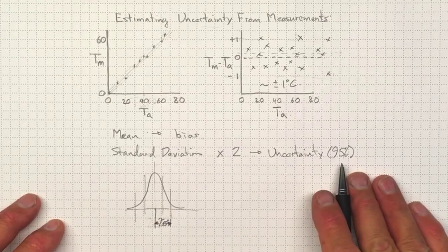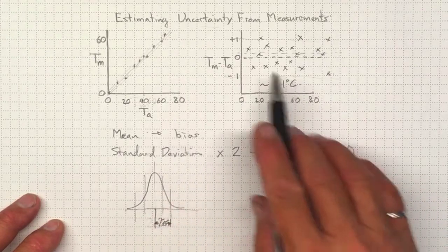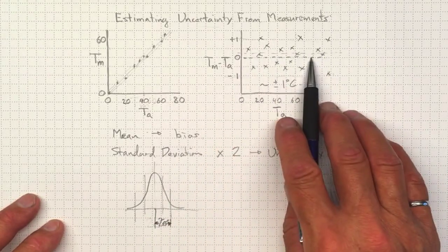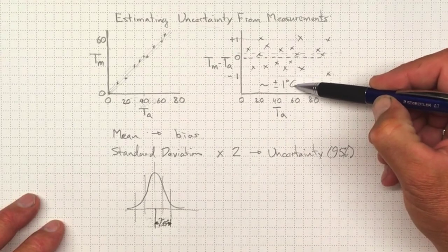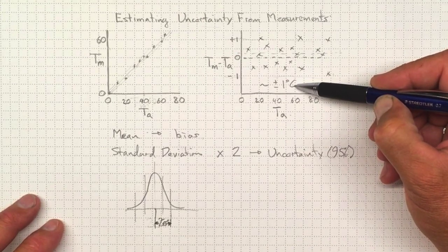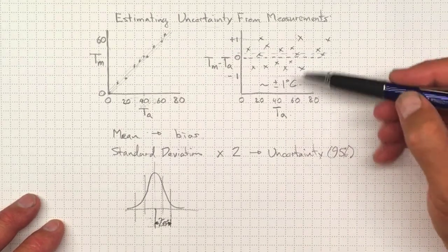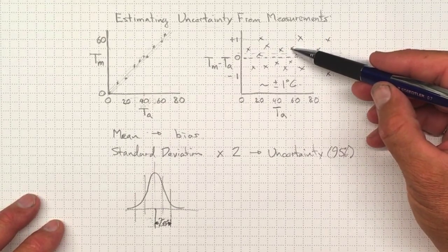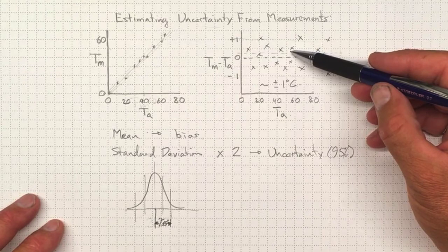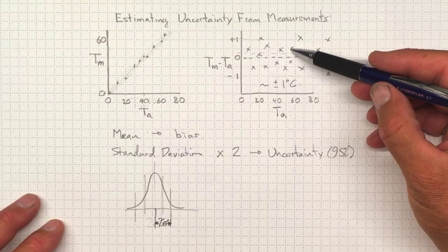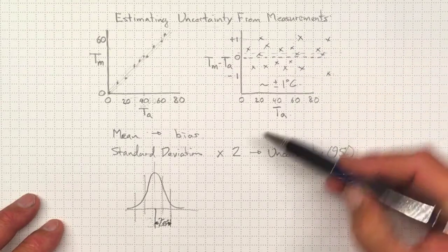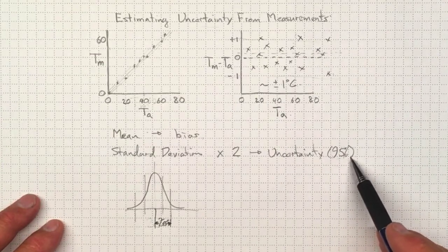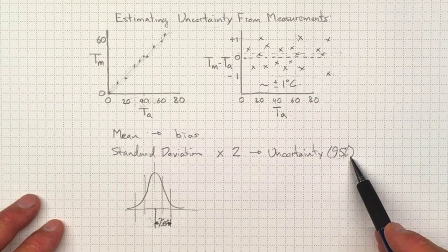So there's another way you can estimate the uncertainty. You can either start by just looking at this error distribution and saying, that's about plus or minus one degrees Celsius, and that's usually good enough. Or you can calculate the standard deviation. And if you've got all that data, it's really easy in any spreadsheet or in Jupyter Notebooks or in MATLAB, calculate the standard deviation, multiply by two, and use that as your uncertainty value.